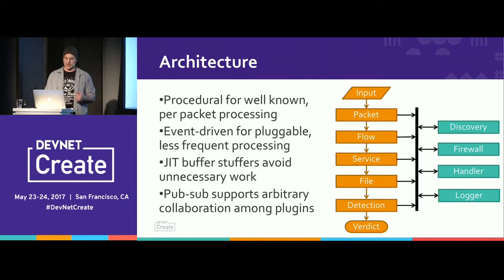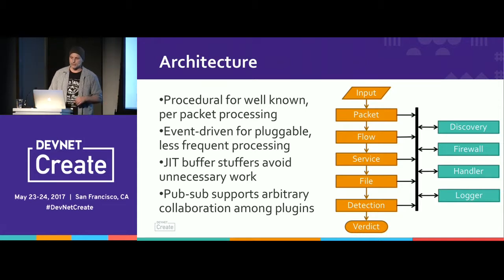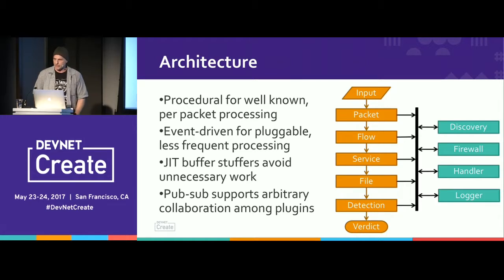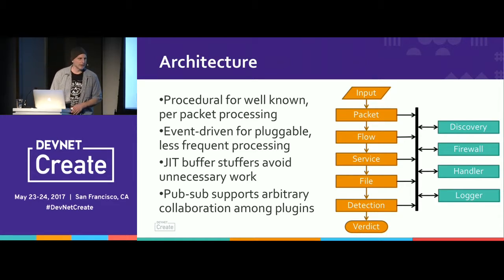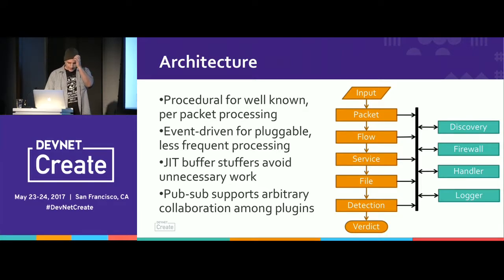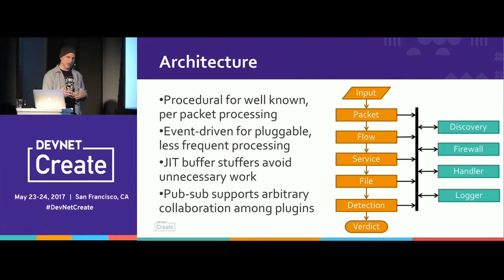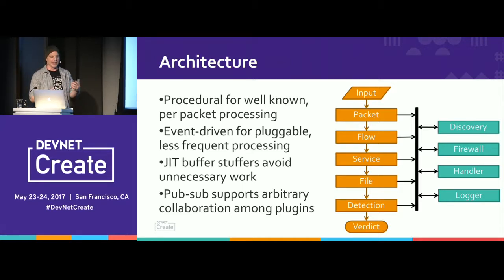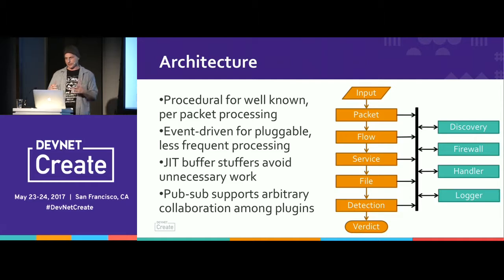We also have JIT buffer stuffers. When we publish information, we publish access to it — we don't actually push the data. If someone wants a normalized buffer, they can ask for it and normalization is done on demand. We do it just in time instead of just in case.